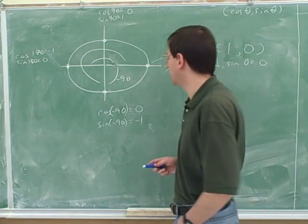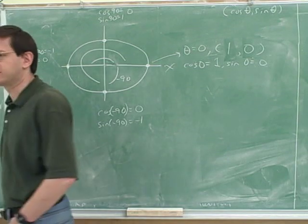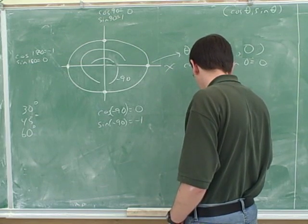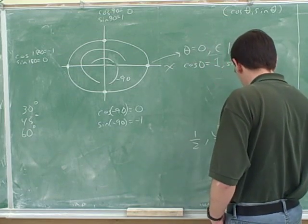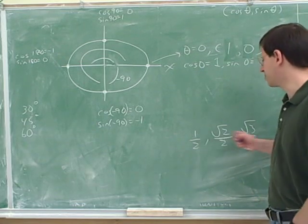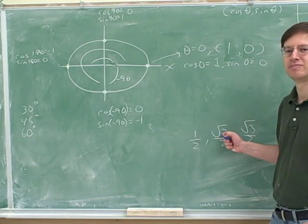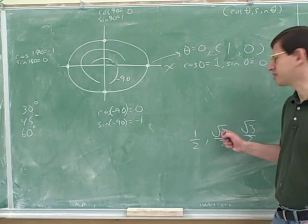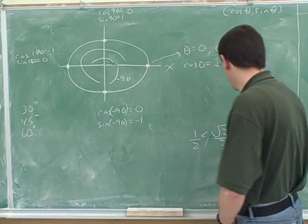We might as well finish up with the other points you're expected to know: 30 degrees, 45 degrees, and 60 degrees. Those are going to use the numbers 1/2, root 2 over 2, and root 3 over 2. Which is biggest and which is smallest? Root 2 is bigger than 1, because 1 times 1 is just 1, and root 2 is about 1.4. And root 3 is bigger than root 2.